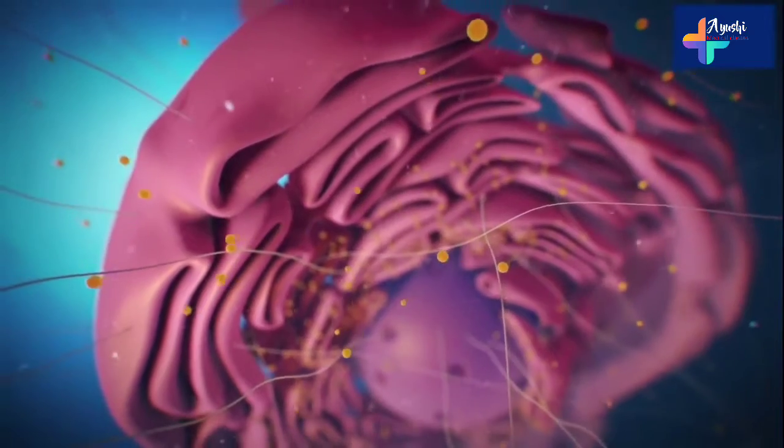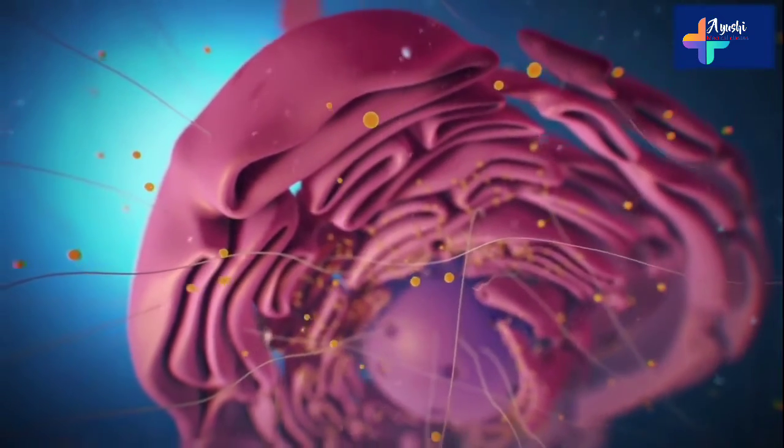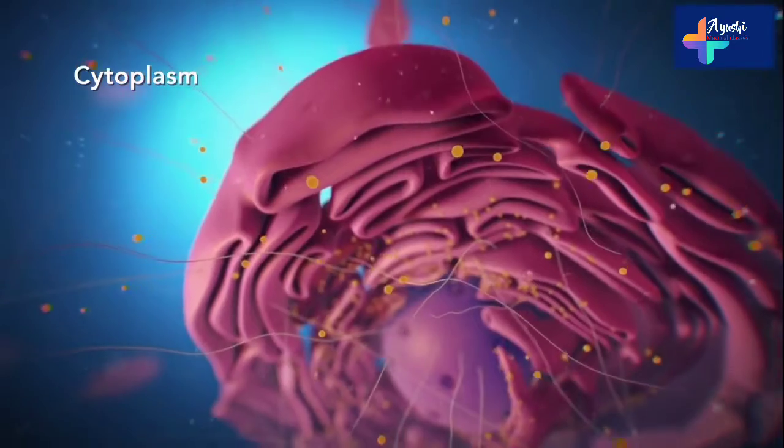Outside the nucleus, the ribosomes and the rest of the organelles float around in cytoplasm, which is the jelly-like substance.